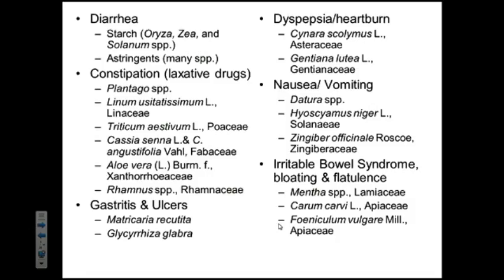For nausea and vomiting, there are some plants you might not expect to be medicinals. Datura is a hallucinogen but also a source of compounds useful in treating nausea and vomiting — scopolamine in particular. You have Hyoscyamus niger, also a very poisonous plant with some medicinal potential. And Zingiber officinale — what is that plant? Ginger, in the Zingiberaceae. Lastly, for irritable bowel syndrome, bloating, and flatulence, we have multiple types of mints in the Mentha genus, Lamiaceae family; Carum carvi in the carrot family or Apiaceae; and Foeniculum vulgare, or fennel, also in the Apiaceae.